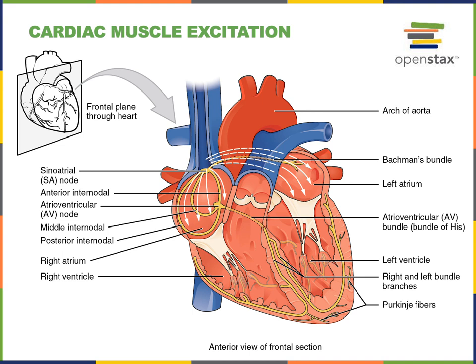The autorhythmic cell action potential is first generated in the sinoatrial node — the SA node — which functions as the pacemaker of the heart. The action potential quickly spreads from the SA node through the intrinsic conduction system and into the contractile cells via gap junctions, in order to stimulate the excitation-contraction mechanism.